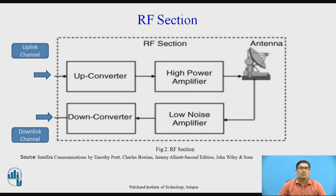Now we want to see the RF section in detail. This diagram shows the RF section. In this RF section, there is the uplink channel and the downlink channel. The uplink channel consists of an upconverter, which feeds to the high power amplifier, which then feeds to the transmitter part of the antenna. In the downlink channel, the receiver part of the antenna feeds to the low noise amplifier, which then feeds to the downconverter. This is the overall generalized diagram of the RF section.